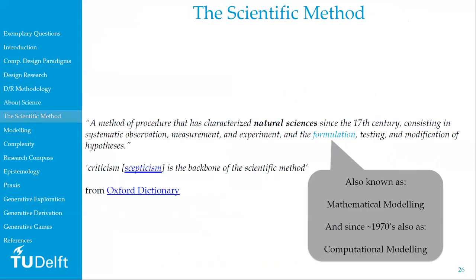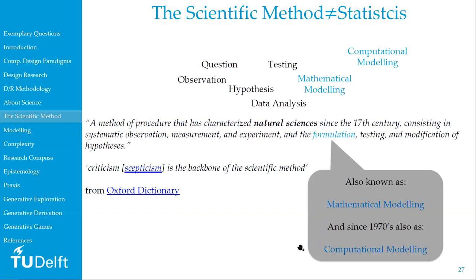There is a very important definition of the so-called scientific method — a meta-level term describing procedures characterizing natural sciences at least since the 17th century or the age of enlightenment — about systematic observation, measurement, experimentation, and formulation, testing, and modification of hypotheses. Since at least the 1970s, mathematical modeling and computational modeling have become increasingly more important in the formulation of these hypotheses, and also in the sciences of the artificial, in propositions and formulations.